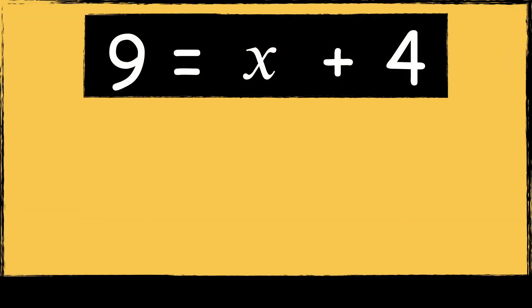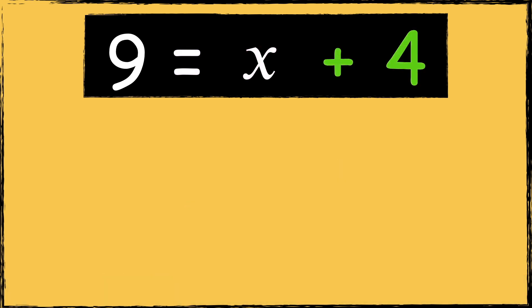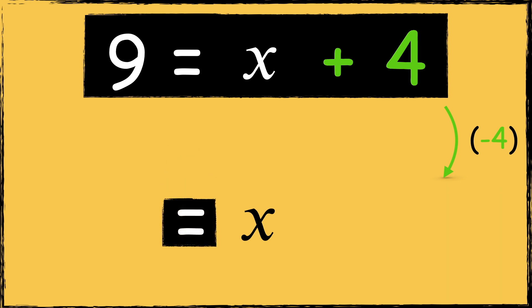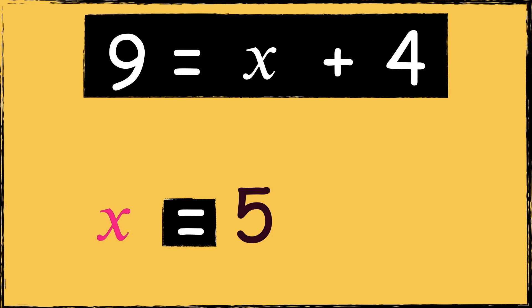Here's another equation: 9 equals X plus 4. To solve this equation we need to find the value of X. Notice how X is on the right side of the equation in this example. The equation's balance is maintained regardless of whether the variable is on the left or the right side of the equals sign. First I can remove the constant term by subtracting 4, so now I'm left with X. Anything that we do to the right side we must also do to the left side, so we need to subtract 4 from 9. 9 take away 4 is 5, so the solution is X equals 5.